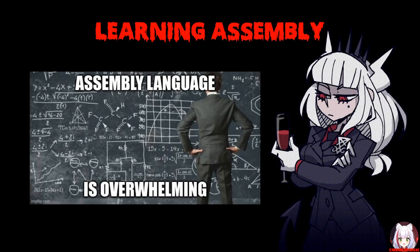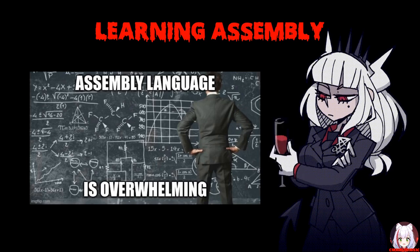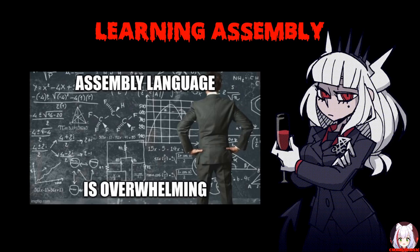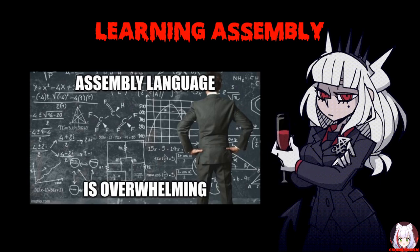Assembly language, often referred to simply as assembly and commonly abbreviated as ASM, is any low-level programming language with a very strong correspondence between the instructions in the language and the architecture's machine code instructions. Machine code is any low-level programming language consisting of machine language instructions used to control a computer's central processing unit, or CPU. This is literally just data interpreted as code by the CPU.